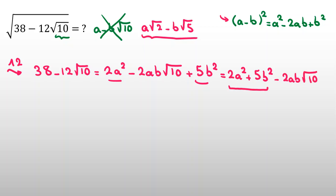2a squared plus 5b squared is 38. So, if I write the important things: 2a squared plus 5b squared equal to 38, and this part, 12 equal to 2ab.